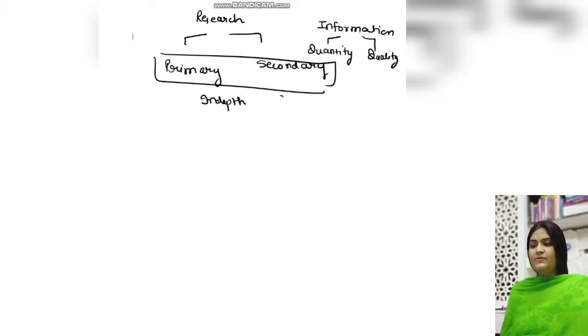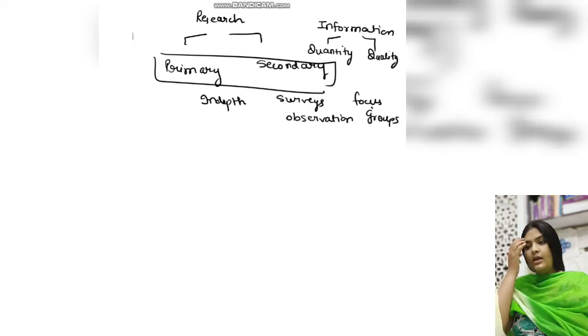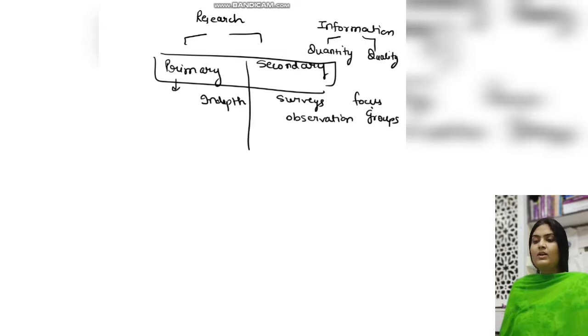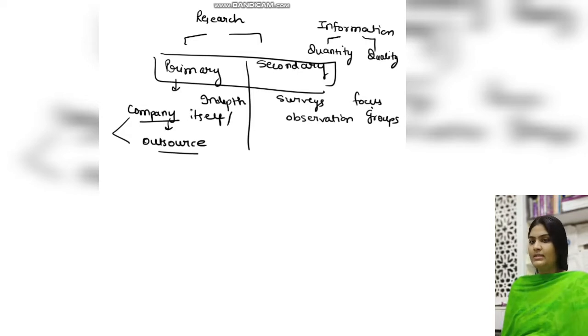Whenever we are doing any type of research, we have surveys, observation, focus groups, interviews — there are many forms through which we can do the research. In primary research, the company itself is collecting the data, or if the company is very big or doesn't want to invest much by itself, they hire a third company — that means they outsource to a research company. Either way, they are ultimately having the data in its primary form, doing it by themselves.